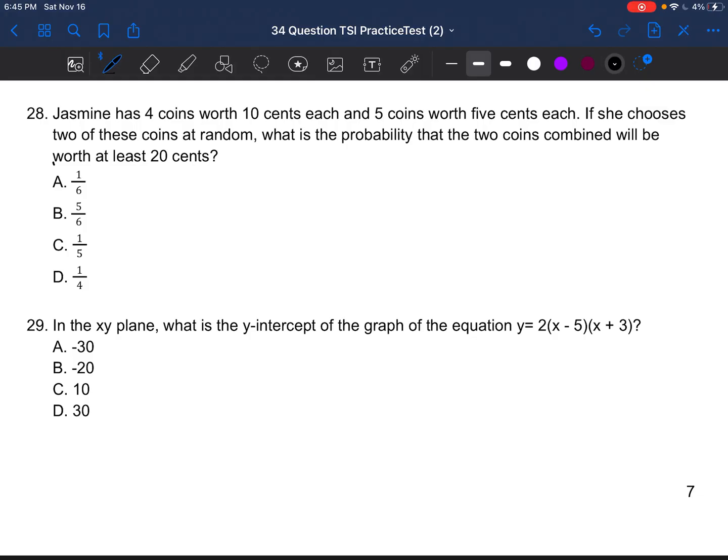And let's go ahead and get started. So question number 28 says Jasmine has four coins worth 10 cents each, and five coins worth five cents each. If she chooses two of these coins at random, what is the probability that the two coins combined will be worth at least 20 cents? Okay, so I'm just going to go ahead and draw a picture. Four coins worth 10 cents each: one, two, three, four, and they're all 10 cents. So that's four dimes. And then five coins worth 5 cents each. So one, two, three, four, five, and they're all going to be 5 cents each.